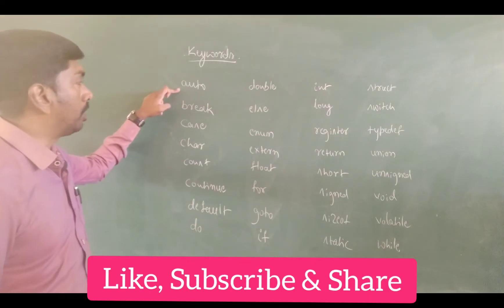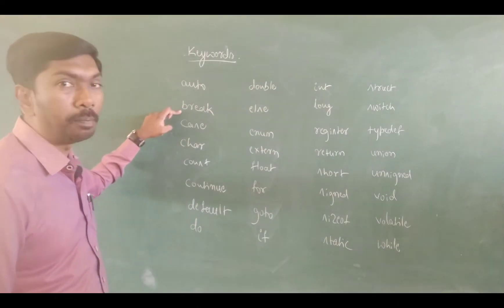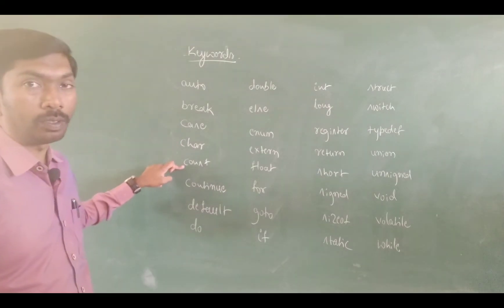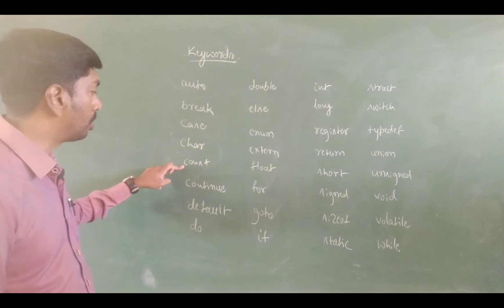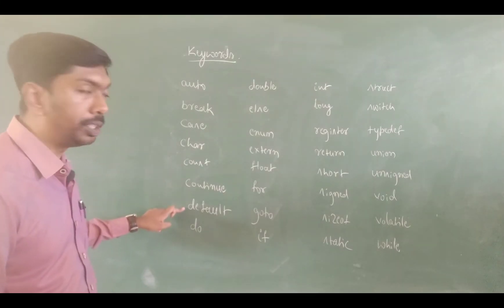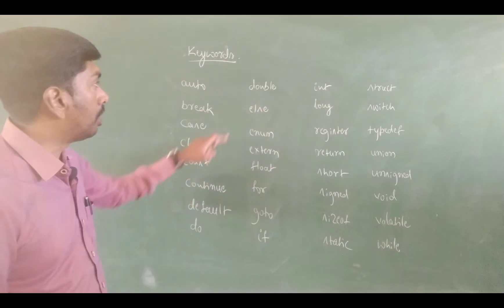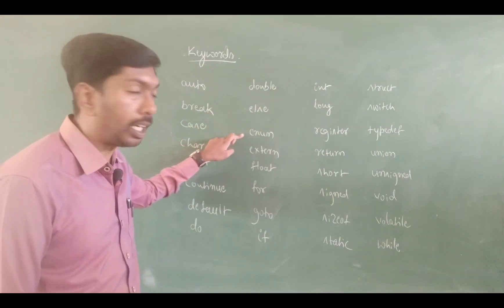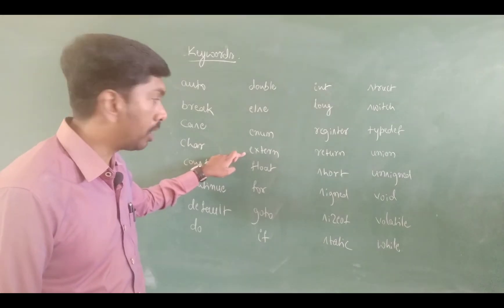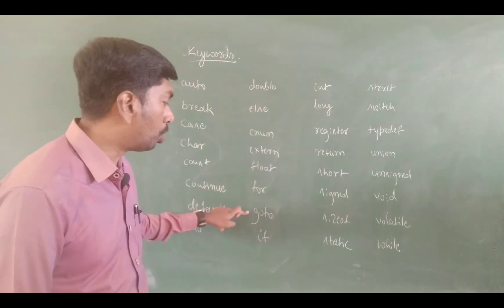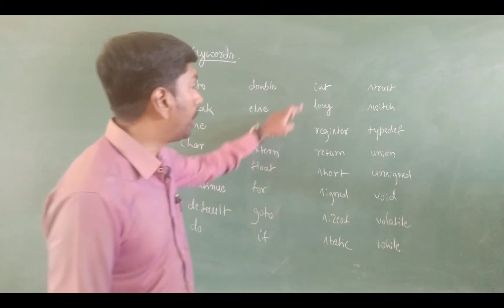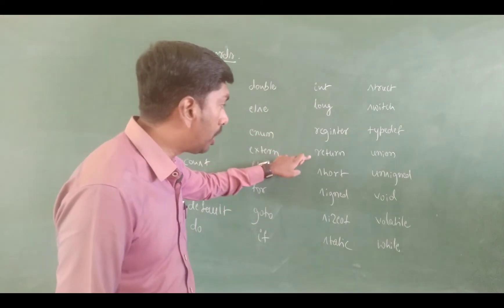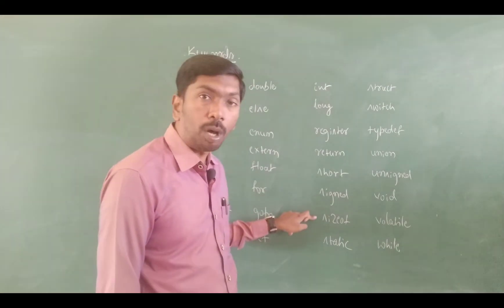The keywords are: auto — the automatic keyword; break; case; char; const — the constant keyword; continue; default; do; double; else; enum — the enumerated data type; extern — external; float; for; goto; if; int; long; register; return; short; signed; sizeof.